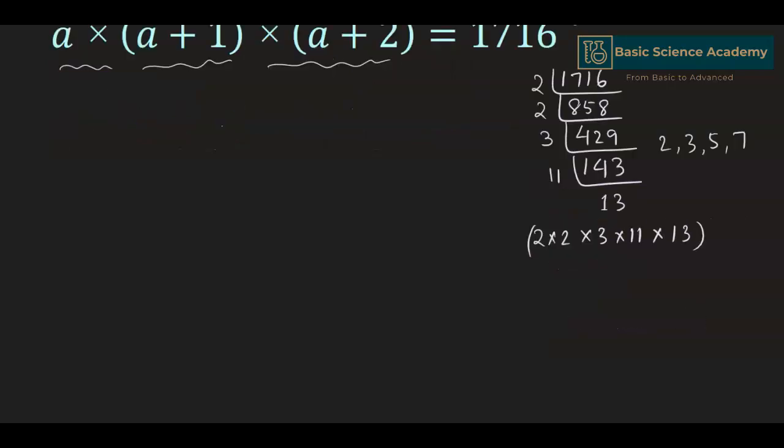So this gives us a × (a + 1) × (a + 2) = 2 × 2 × 3 × 11 × 13.